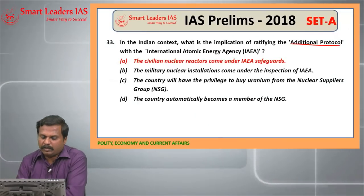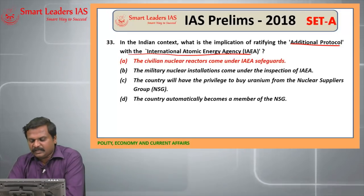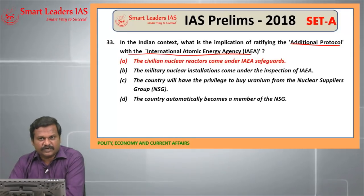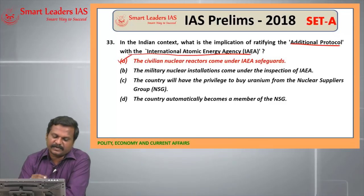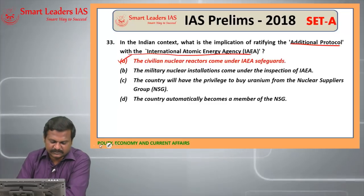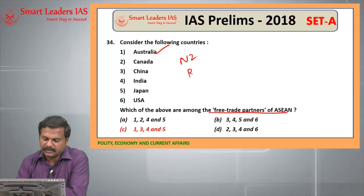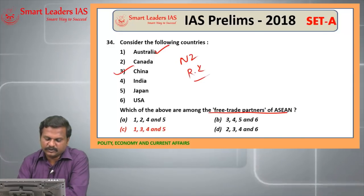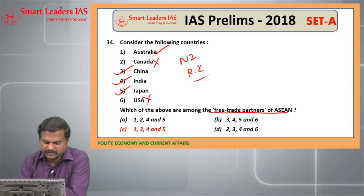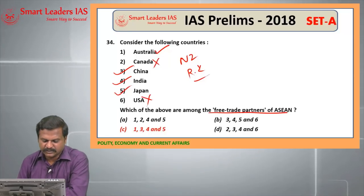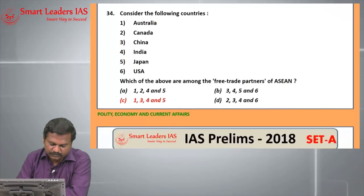33rd question: Additional Protocol with IAEA means civilian nuclear reactors will come under the ambit of IAEA safeguards, whereas military nuclear reactors will be outside the scrutiny of IAEA. So A is the right answer for the 33rd question. 34th question: Free trade partners of ASEAN — Australia, New Zealand, Republic of Korea, China, India, and Japan are there, but Canada and the US are not there. So the answer is 1, 3, 4 and 5 — C is the right answer.